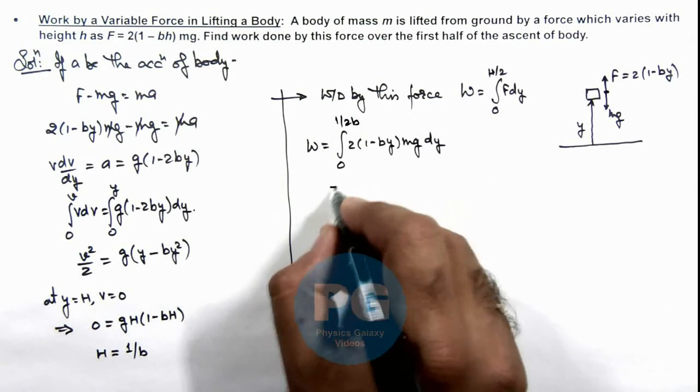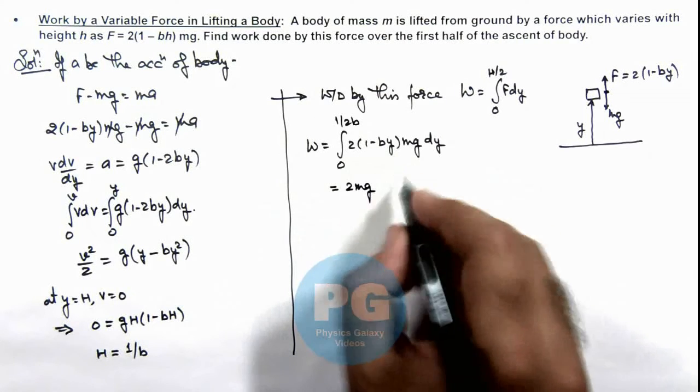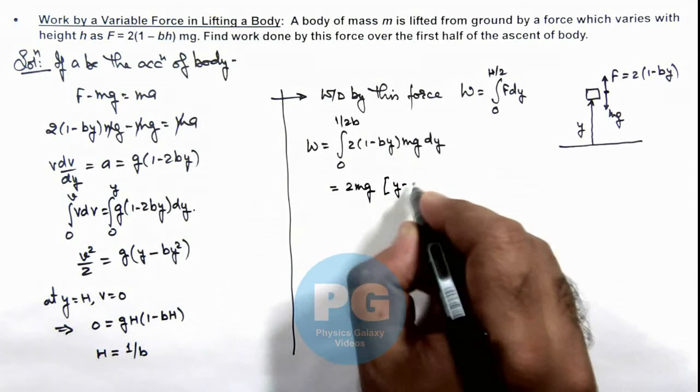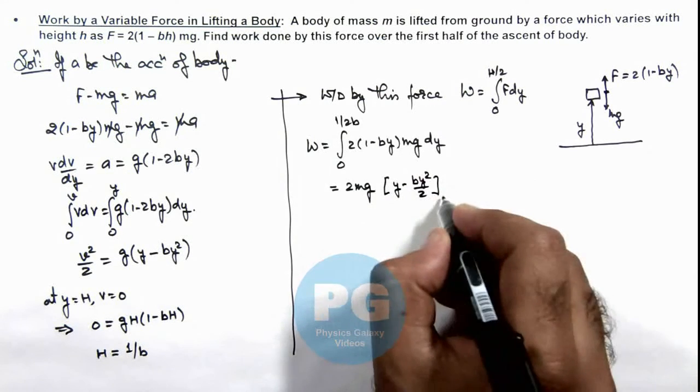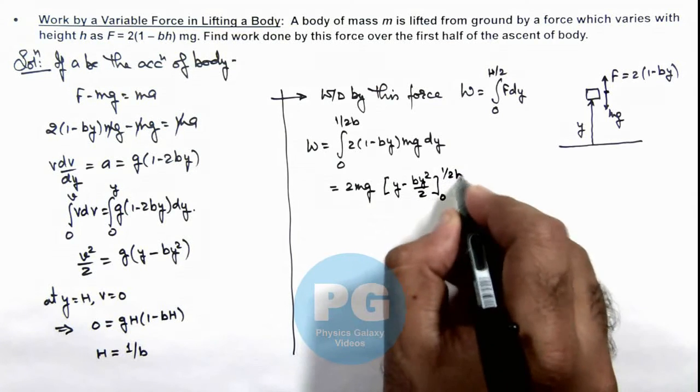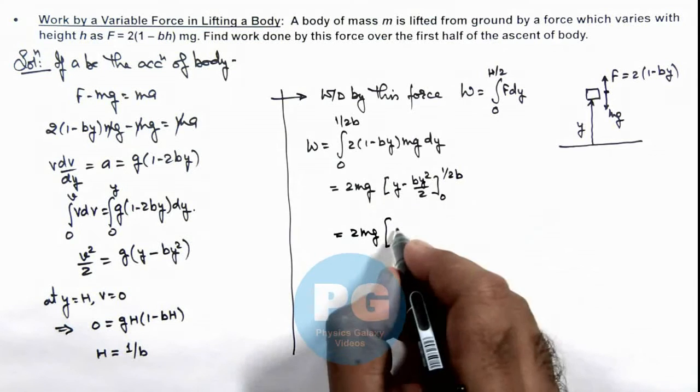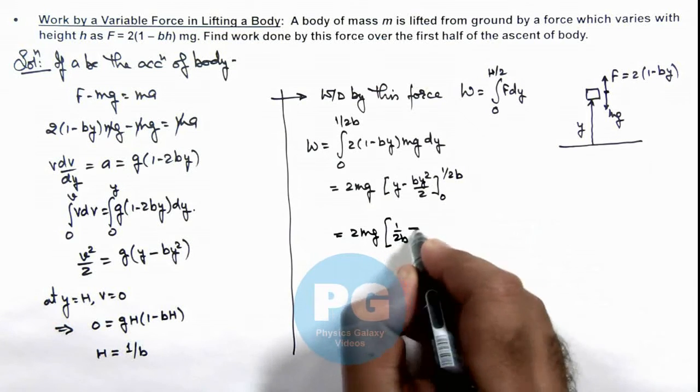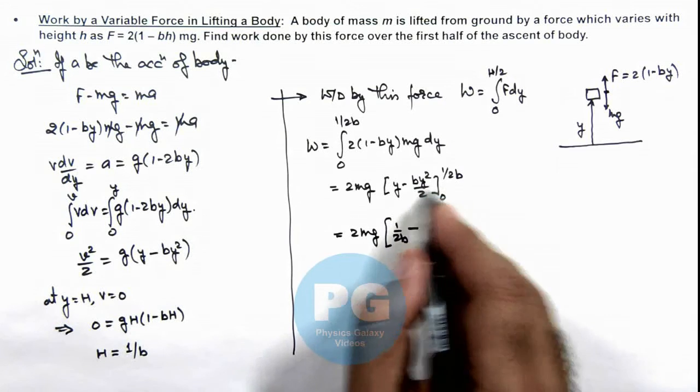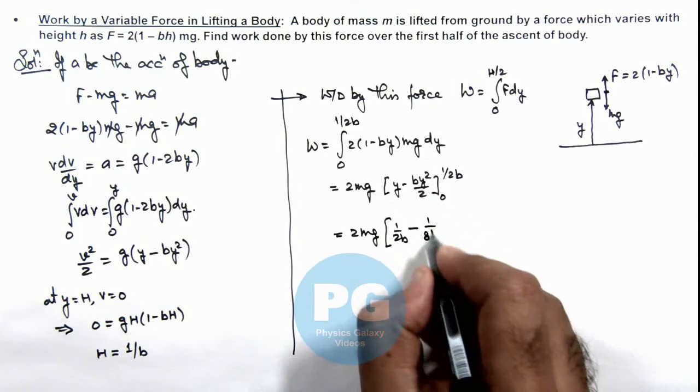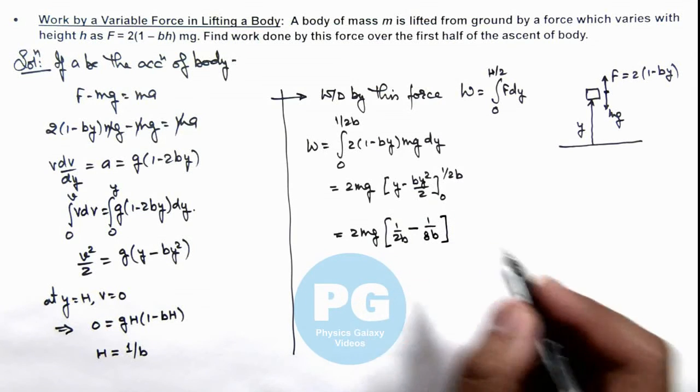So on integrating this will be 2mg is a constant, and if we integrate 1 - by this is y - by²/2. And we apply limits from zero to 1/(2b). So further this is giving us 2mg on substituting the limits this is 1/(2b) minus here if we substitute 1/(2b) this is 1/(4b²) so this is 1/(8b). And lower limit is zero so there won't be any other term here.